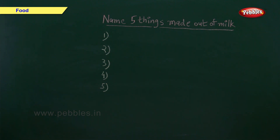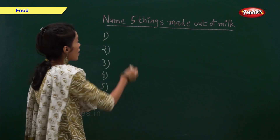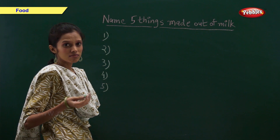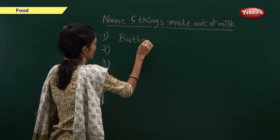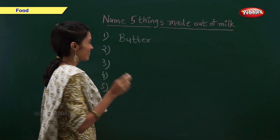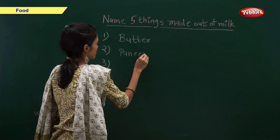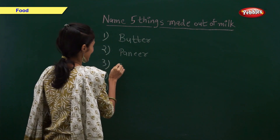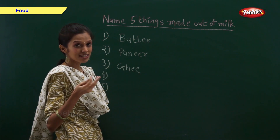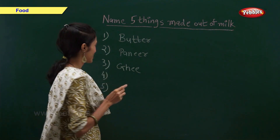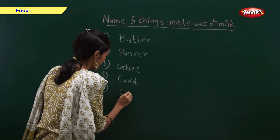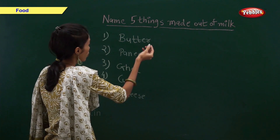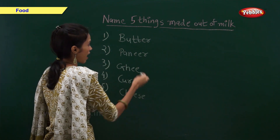Now you have to name five things made from milk. Can you tell me what is made out of milk? Yes — butter. What else is made out of milk? Paneer. What else? Ghee. What else is made out of milk? Curd. What else? Cheese. So, butter, paneer, ghee, curd and cheese are made out of milk.